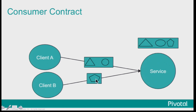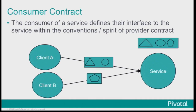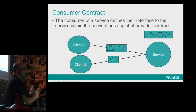Now let's take a look from the consumer side. When you look at consumers, sometimes you find they actually care about different pieces. Client A only cares about the triangle and the circle, and client B cares about the pentagon. So if you were to remove the triangle and the circle, client B would be like 'I don't care' because it doesn't affect it. What we're really trying to drive towards is: what if every consumer defined what they cared about and gave it to the provider? In this diagram, you'd have two contracts.